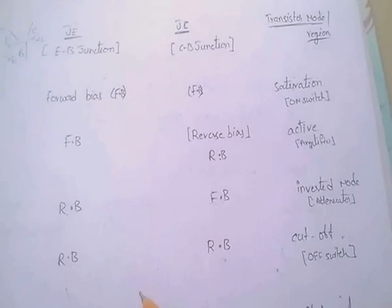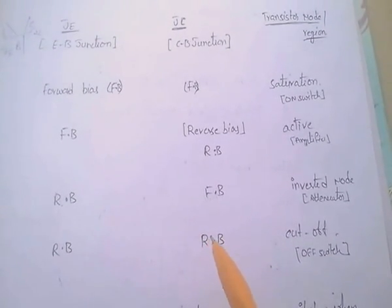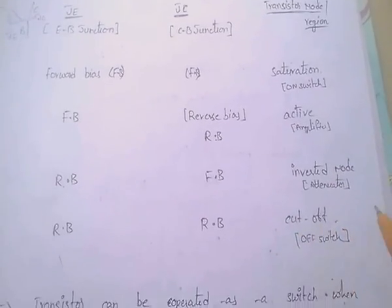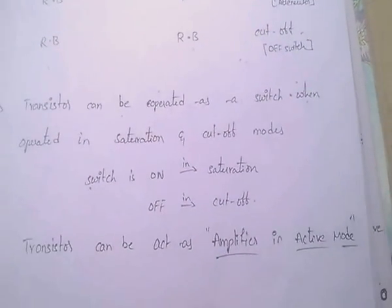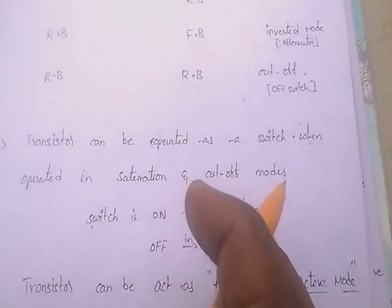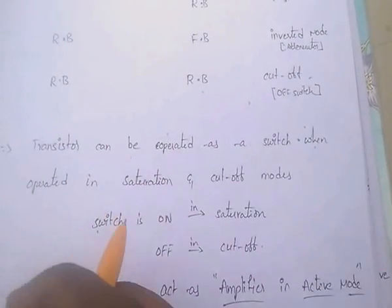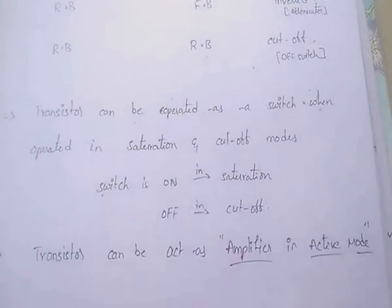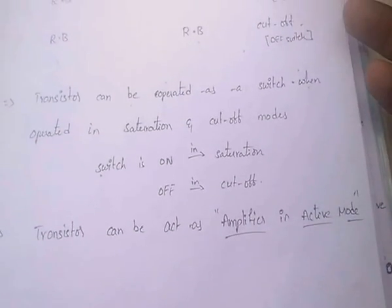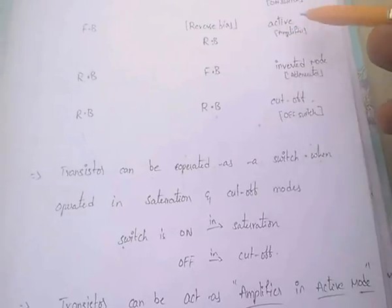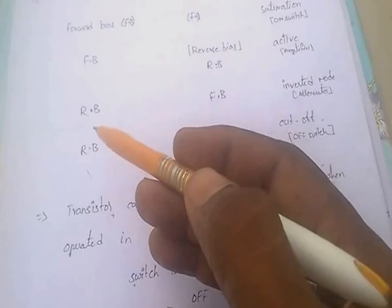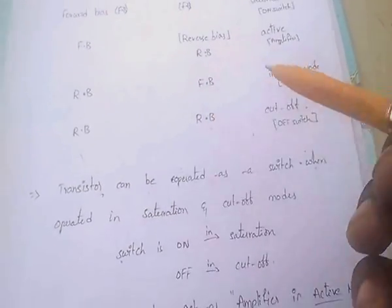When both junctions are reverse biased, the operation is in the cut-off region — that is, it acts as an off switch. Transistor operates as a switch in saturation and cut-off modes, as an amplifier in active mode, and as an attenuator in inverted mode. In inverted mode, JE is reverse biased and JC is forward biased.